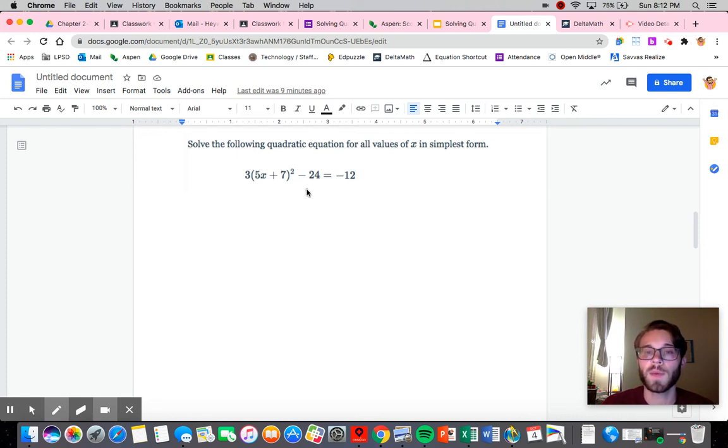So the first thing that we need to do when we are solving a quadratic equation where we're going to use square roots is we are going to get the squared term by itself. Now in this sense, we could multiply all this out, but it's really not going to help us. There's an easier way to do it. So we can get this term with the square by itself first.